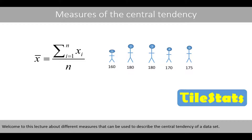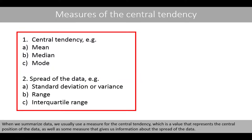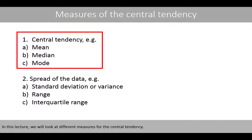Welcome to this lecture about different measures that can be used to describe the central tendency of a data set. In this lecture, we'll have a look at the mean, median, and mode. When we summarize data, we usually use a measure for the central tendency, which is a value that represents the central position of the data, as well as some measure that gives us information about the spread of the data.